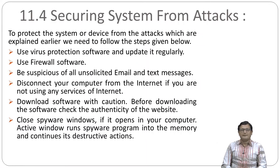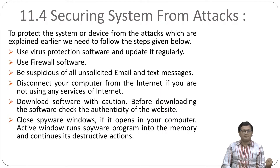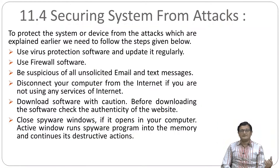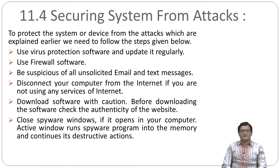Now, how can we secure our system from different types of attacks? As we have discussed in the last session, there are different types of attacks. There are certain softwares — for example, viruses, spywares, adwares — they are programs that usually run in invisible mode. There are also hackers or crackers who will illegally access the data stored in your computer system. So to protect the system or device from these attacks, we need to follow the following steps. Here there are several steps, and if you take care of these steps, you will be successfully able to protect your network or network resources.